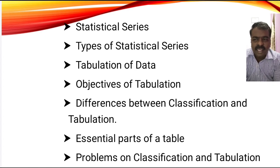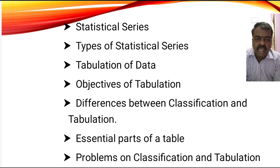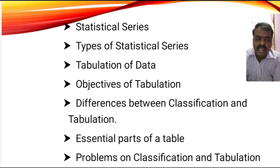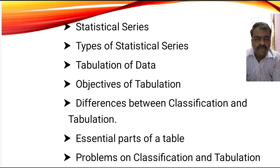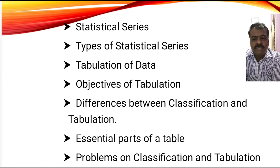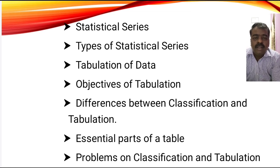Tabulation of data means presenting data in the form of a table so that even a common man can easily understand the content by looking at it. The essential parts of a table include the title, the head note, the foot note, the captions, the stubs, and so on. After covering these theoretical aspects, we went on to solving problems on classification and tabulation.